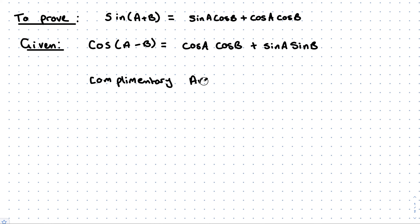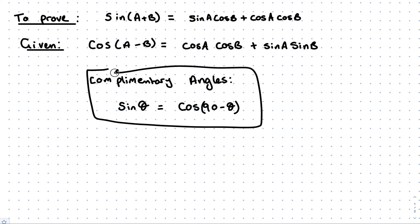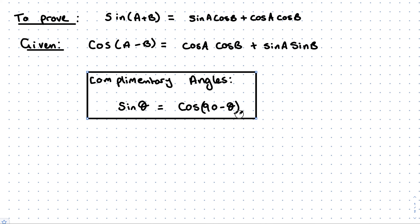Complementary angles tell us that if you have sine of an angle — let's call it theta — that is equal to cos of 90 minus that angle. If you're not sure where that's coming from, there is another video that you should go back and take a look at. You don't need to prove it while you're working through this proof, but you are going to use it.